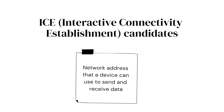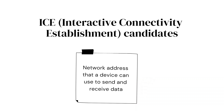You're going to hear this term a lot in our next videos, so let's understand what ICE is. ICE stands for Interactive Connectivity Establishment. In simplest terms, ICE is just network address information — the information about the network that a device uses to send and receive data. You can visualize it like some sort of a gate, and the information about that gate through which data can come in or go out.